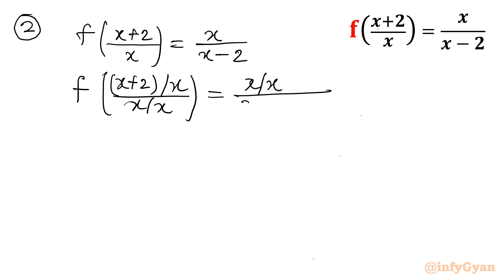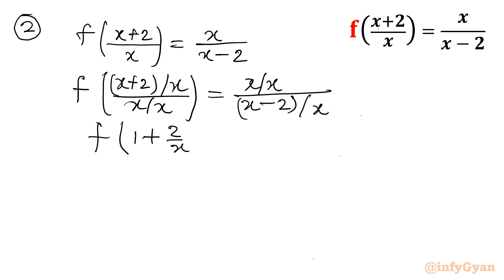The right hand side becomes 1 over 1 minus 2 over x. So we have f of 1 plus 2 over x equals 1 over 1 minus 2 over x.